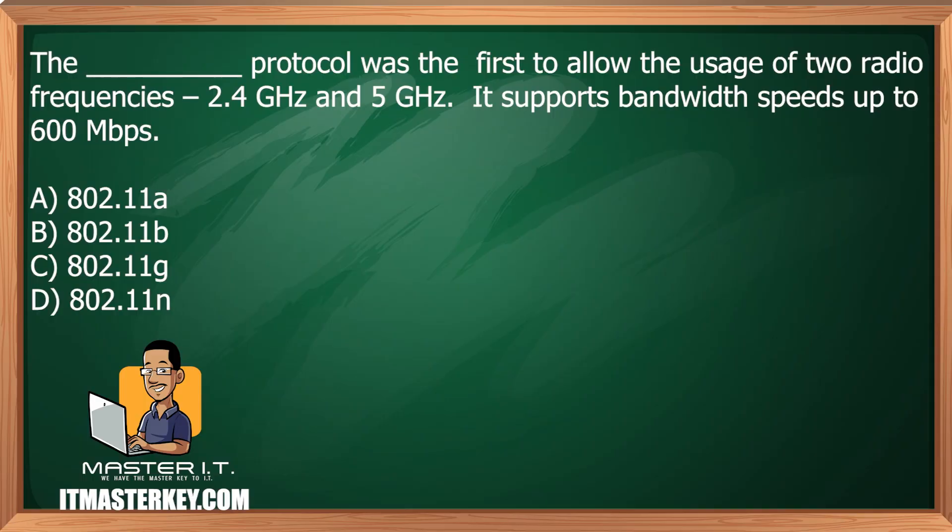The blank protocol was the first to allow the usage of two radio frequencies — 2.4 gigahertz and 5 gigahertz. It also supports bandwidth speeds up to 600 megabits per second.